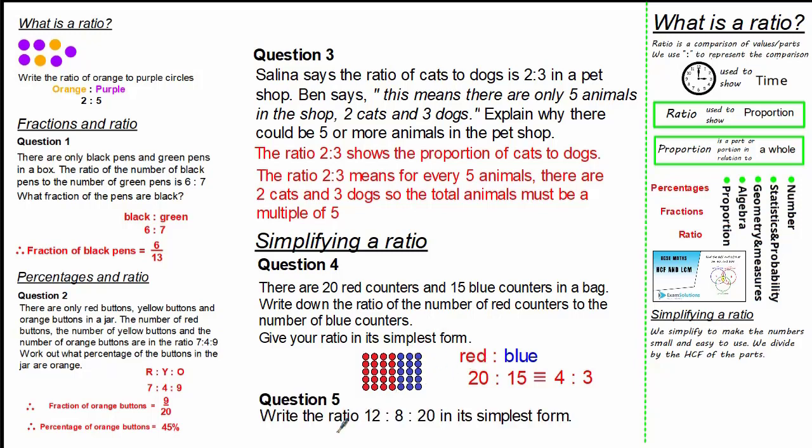Moving on to another question, it states that we need to write the ratio of 12 to 8 to 20 in its simplest form. Now we have 3 parts to our ratio but the principle is exactly the same. We divide by the highest common factor, and the highest common factor of 12, 8 and 20 is 4. So we divide every part of our ratio by 4. 12 divided by 4 is 3, 8 divided by 4 is 2, and 20 divided by 4 is 5. So we have our equivalent ratio in its simplest form is 3 to 2 to 5.